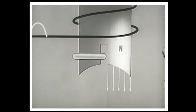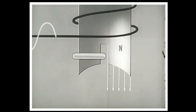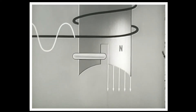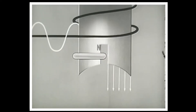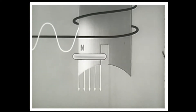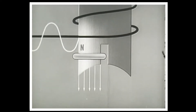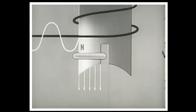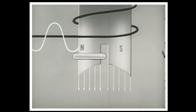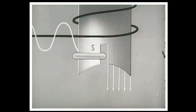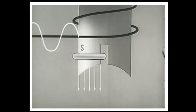Lines of force will emerge from the unshaded section of the pole face first. The inductance caused by the ring makes the shaded portion of the pole lag behind. This alternating pulsating action creates a phase difference within the pole.